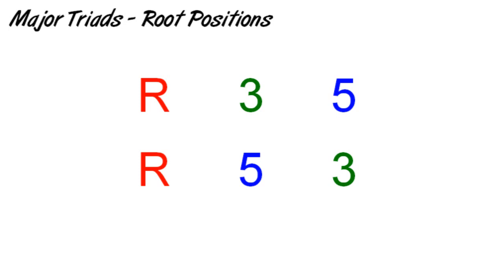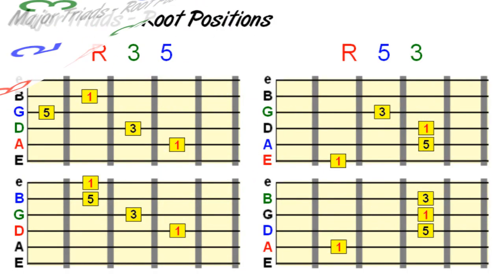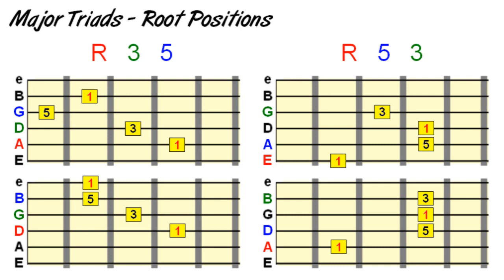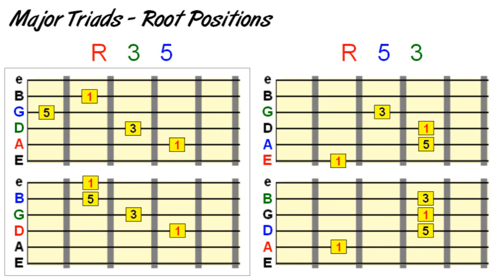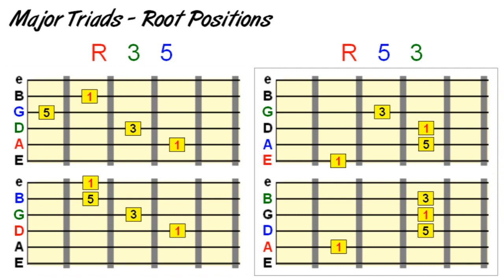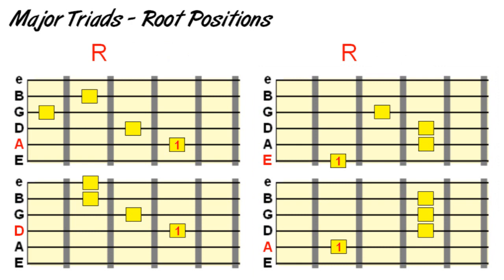So here we have two root positions: one, three, five and one, five, three. These are the standard triad stacks with the root on the bass that occur in the most common chord shapes. In the first two chord forms, we can see the major third is built on the root, whereas in the second two chord forms, the fifth is built on the root. Because the root note acts as the bass in both these forms, they will sound quite similar, although it's good to know both forms for lead voicing — for example, if you specifically need a lower sounding major third, you would use the one, three, five chord form.